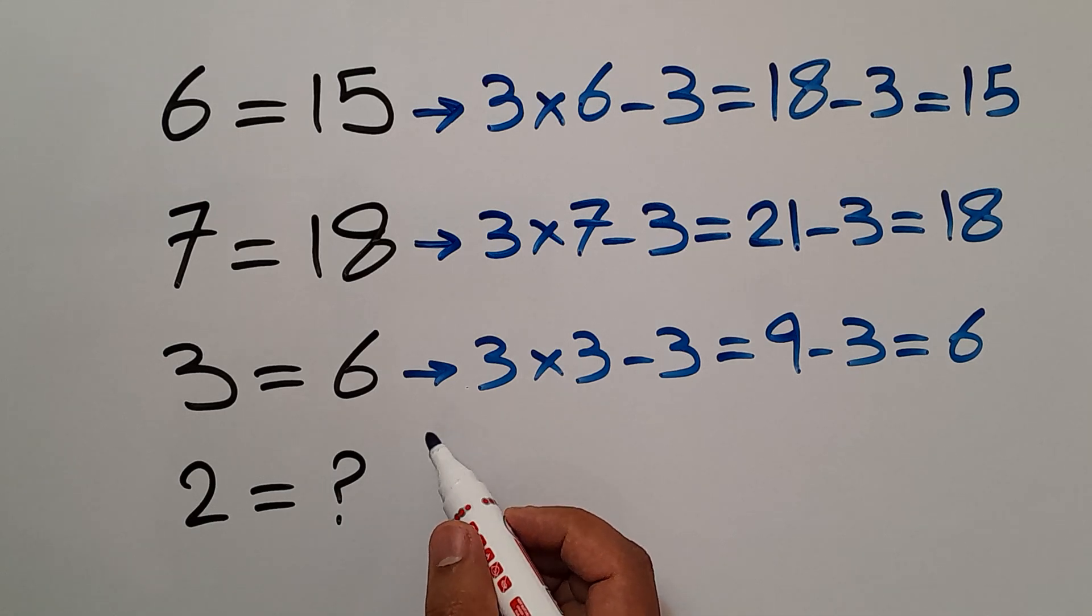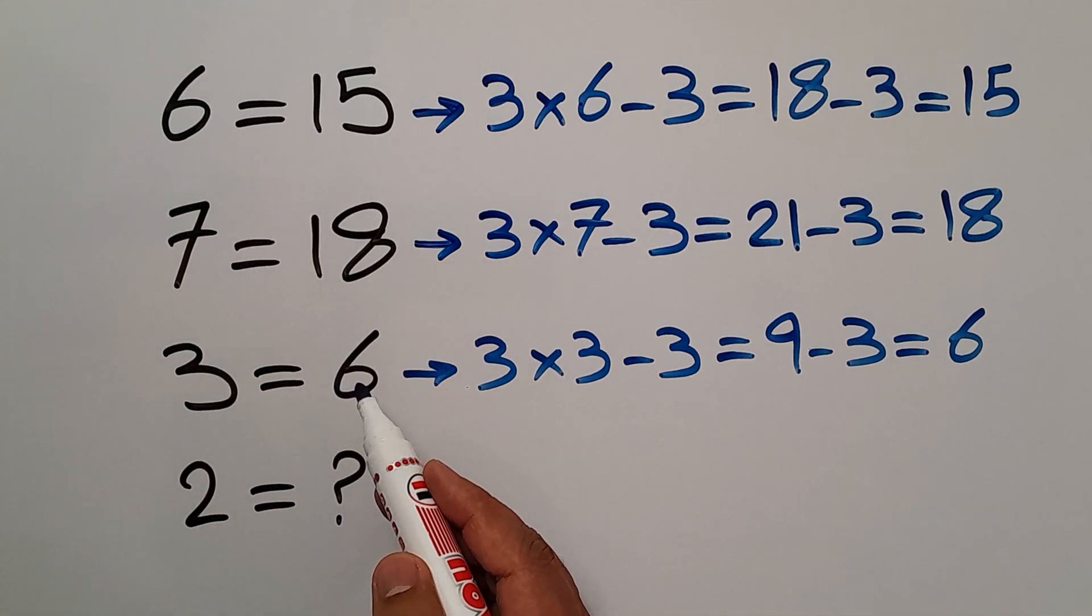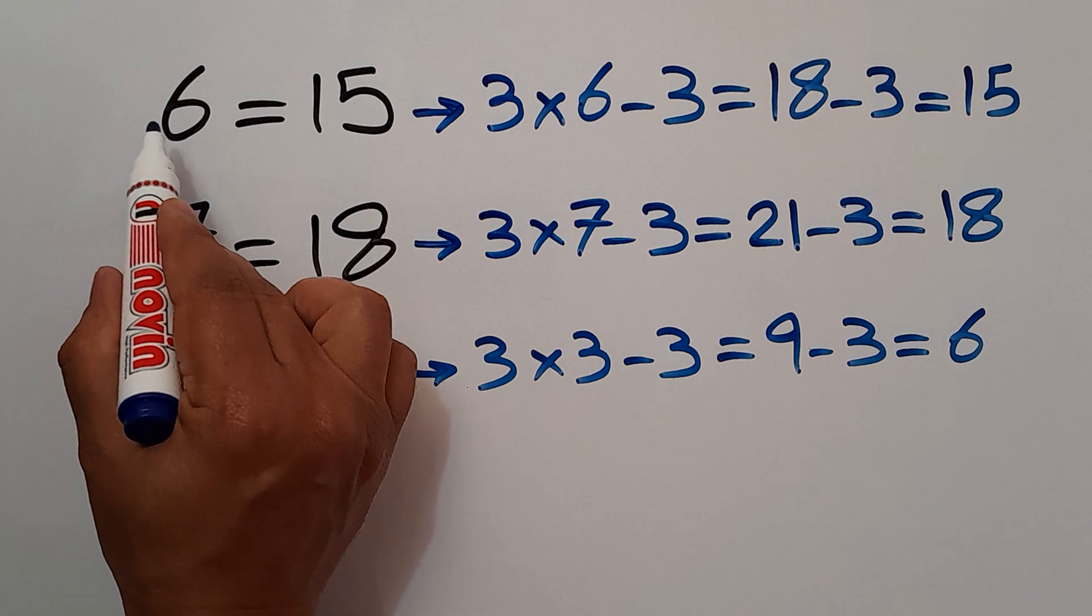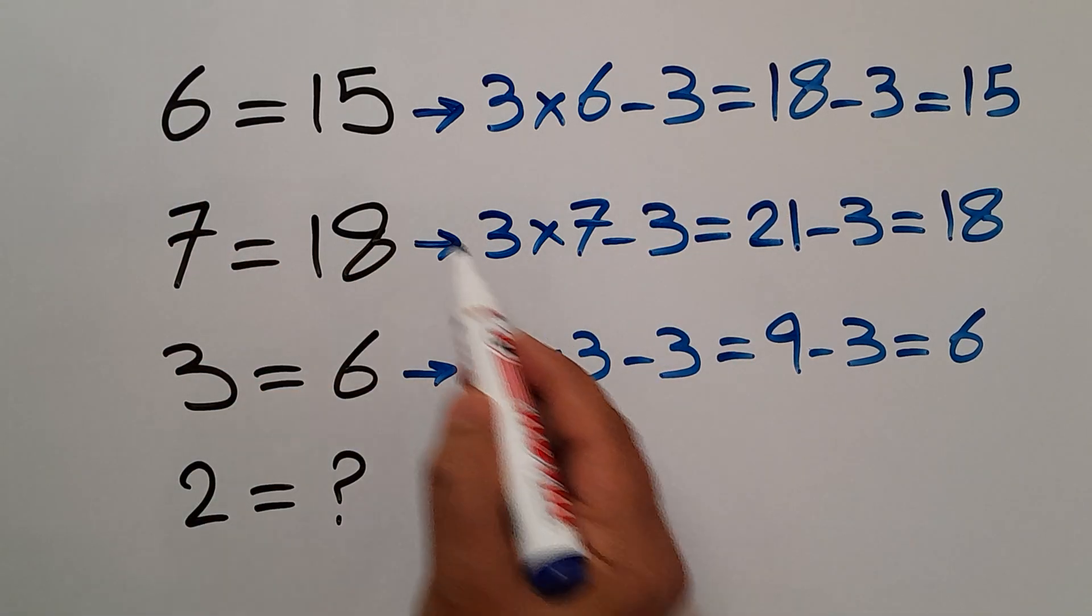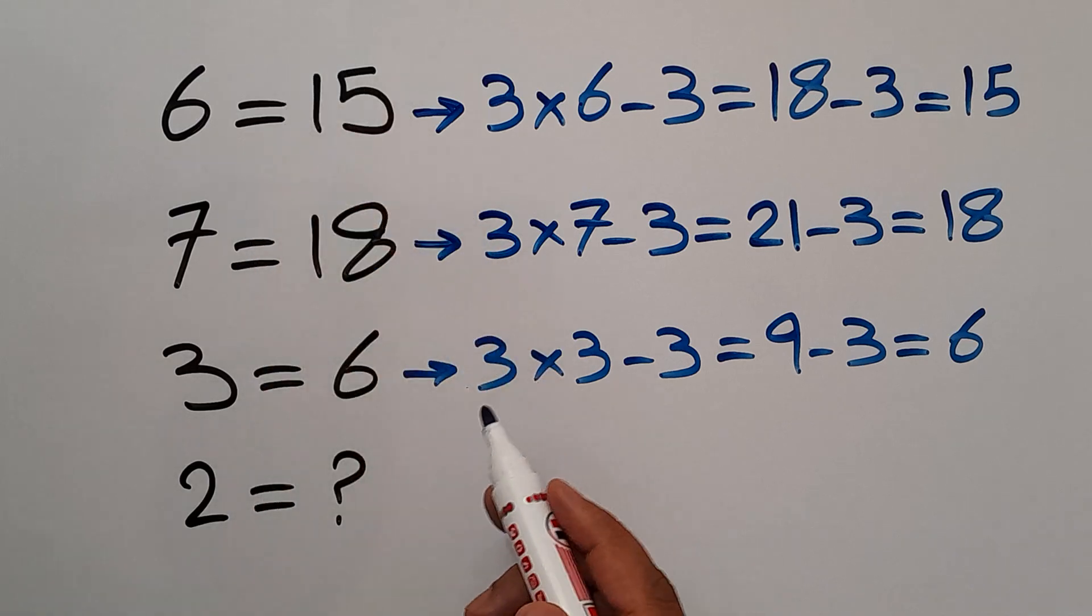So therefore, the pattern that exists here is 3 times the left-hand side number minus 3 gives us the right-hand side number.